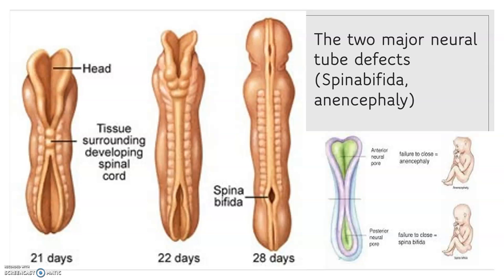Anencephaly is caused when the upper part of the neural tube that forms the brain does not close completely. Babies with this condition are missing major parts of the brain, skull, and scalp. They do not survive long after birth, usually just for a few hours. Girls are three times more likely to have this condition than boys. This is what it looks like when the neural tube fails to close on the upper part, resulting in anencephaly.